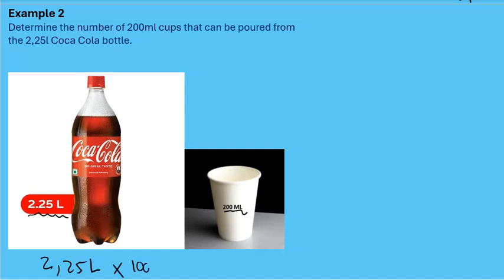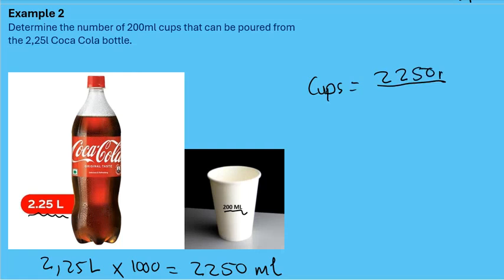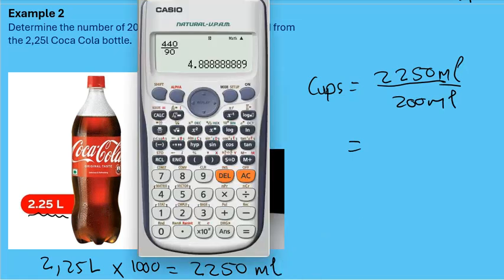I'm going to change the volume of the Coca-Cola: 2.25 liters, and each liter has 1000 milliliters, so we multiply 2.25 by 1000, giving us 2250 milliliters. Now we can do the calculation: take the volume of the Coca-Cola and divide it by the volume of the cup — 2250 divided by 200 equals 11.25.